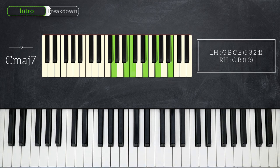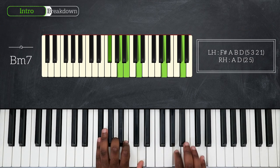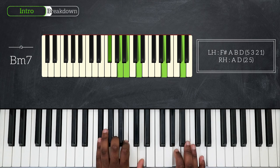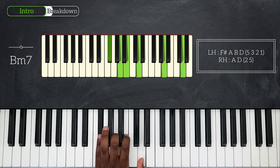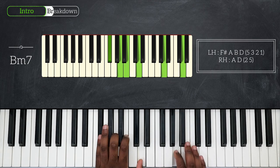Then still playing on the same register on the keyboard, I'm gonna play B minor 7. Still using 4 notes on my left hand and 2 on my right. That's F sharp, A, B and D for my left hand. Right hand plays A and D.